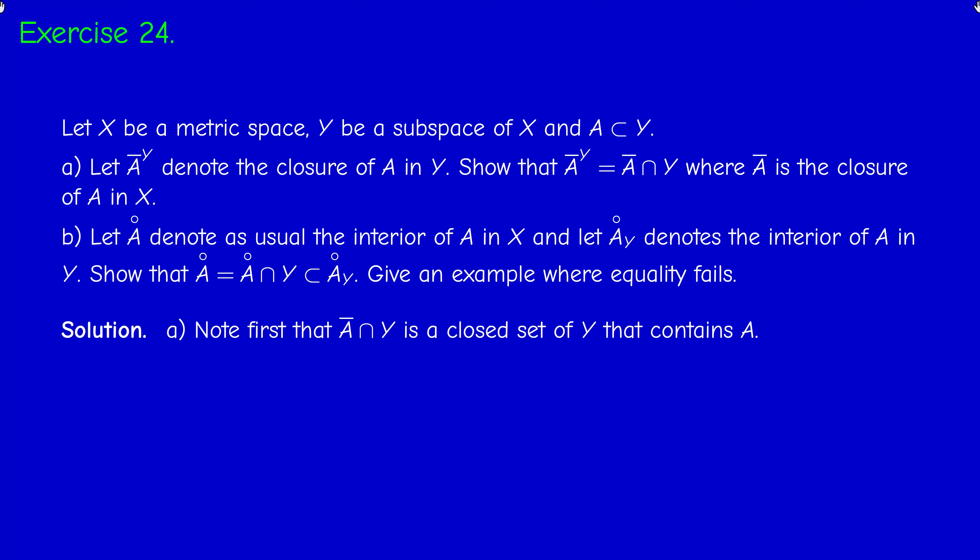We can talk in Y about open sets relative to Y — open sets, closed sets, interior, closure, and so on. All the concepts that we learn hold in this setting. We have to distinguish between two spaces: the bigger space X and the smaller space Y. We have a subset A of Y. Let A bar_Y denote the closure of A in Y — the smallest closed set in Y containing A. We have to show that A bar_Y is just the intersection of A bar with Y, where A bar denotes the closure of A in the bigger space X.